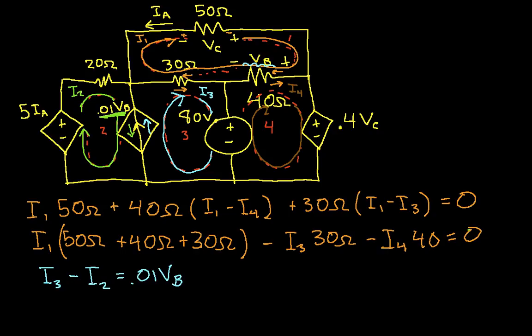So why don't we just do that right now? You can see that V sub B, we have I1 going this direction, I4 going this direction. So V sub B is going to be 40 ohms times I1 minus I4. Okay, so we can rewrite this equation as I3 minus I2 is equal to 0.01 times 40, which will be 0.4 I1 minus I4.